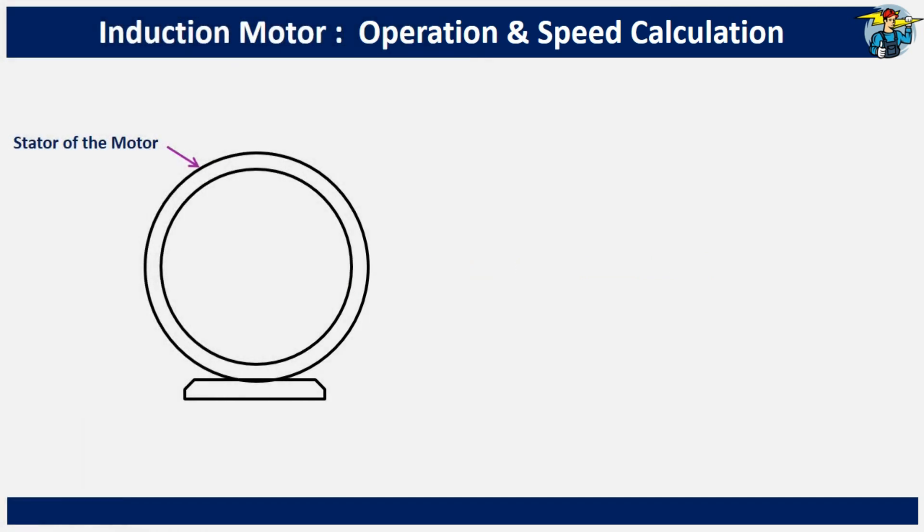Here, what you see is the stator of an induction motor. There are two poles, or more precisely, one pair of poles, fitted vertically inside the stator.